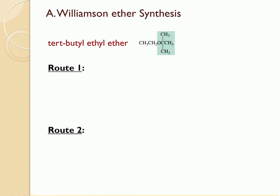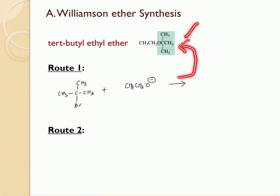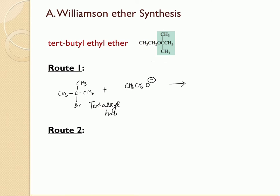If you want to synthesize tertiary butyl ethyl ether, you must choose starting materials very carefully. If you choose tertiary butyl bromide as the alkyl halide and react it with ethoxide, this will not lead to the substitution product. Tertiary alkyl halides do not undergo SN2 reactions, so the reaction will instead lead to an elimination product.